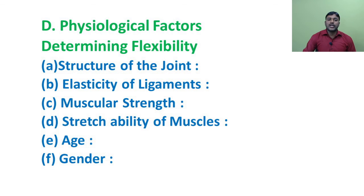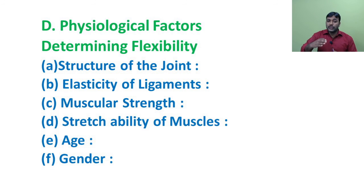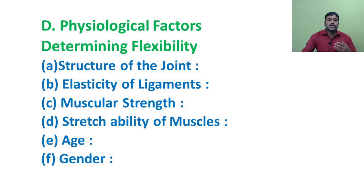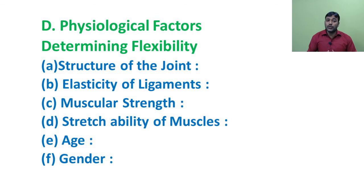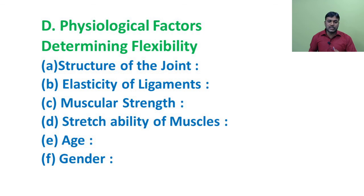Second factor: elasticity of ligaments. Ligaments are connective tissues that connect two or more bones around the joint. The range of movement around the joint depends on the elasticity of ligaments. It has been observed that due to long-term training, the elasticity of ligaments increases, leading to better flexibility.